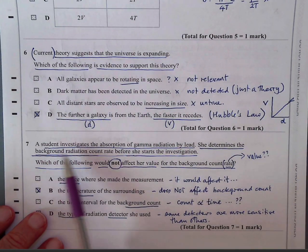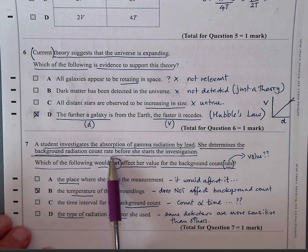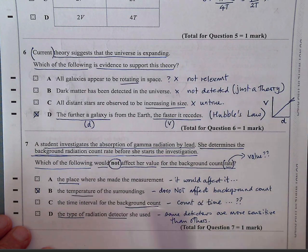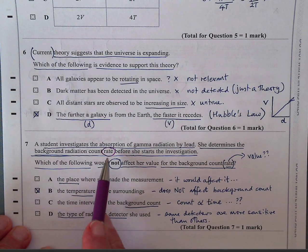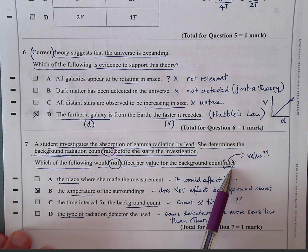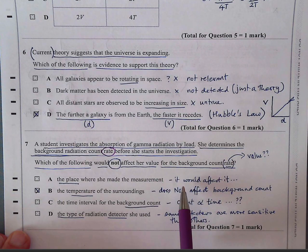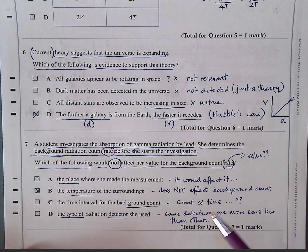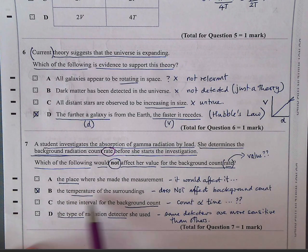Question seven. A student investigates the absorption of gamma radiation by lead. She determines the background radiation count rate before she starts the investigation. Now here, they're talking about count rate. So you have to know that's per second or whatever. It has to be a rate. That means divided by time, per unit time. Which of the following would not affect her value for the background count rate? So the place where she made the experiments, this would affect it because the background count varies according to where you're living. For example, if you measure the background count rate in Cornwall in the UK, where they have a lot of radioactive rocks, then the background count rate will be higher.